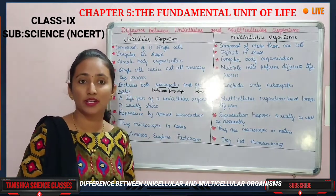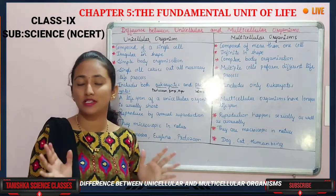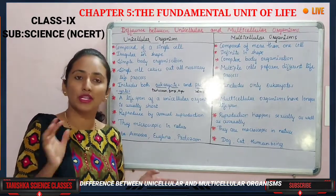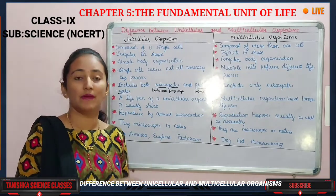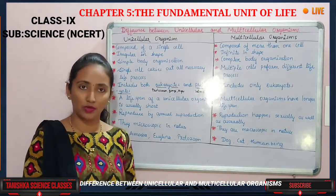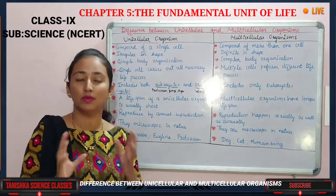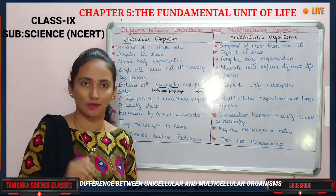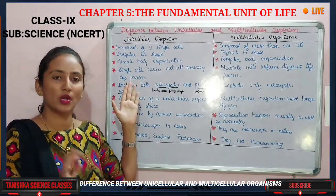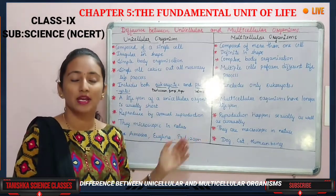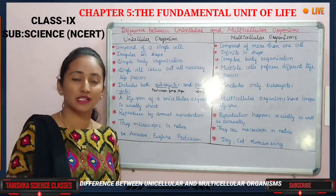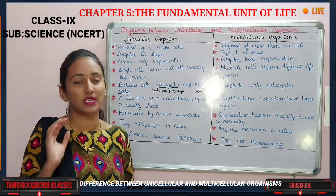The third difference is body organization. Unicellular organisms have a simple body organization — there are no complex organs; only one cell is present, and that cell performs all functions. For example, drawing an amoeba takes only a few seconds, whereas drawing the internal structure of a human being takes much more time. In multicellular organisms, there is a complex organization containing various organs and organ systems.